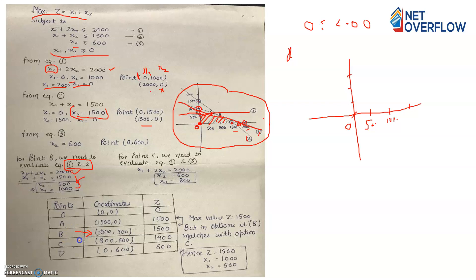For point C, you solve equation number 1 and equation number 3 together. From equation 3, x2 = 600. Substituting x2 = 600 into equation 1: x1 + 2(600) = 2000, giving x1 = 800. So point C is (800, 600). Now you have all the corner points: O, A, B, C, and D.